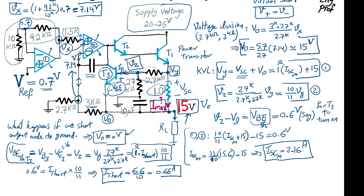In summary, if we short the output to ground — which is an invalid use case but the circuit should tolerate it — the circuit is no longer functioning as a supply voltage, but it is designed so that the current through the 1 ohm resistor and power transistor T1 is only 660 milliamps, considerably less than the 2.16 amp maximum. This example illustrates the use of op-amps and BJT transistors in designing a voltage regulator and how it works.